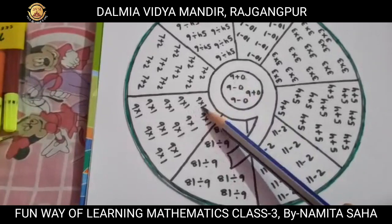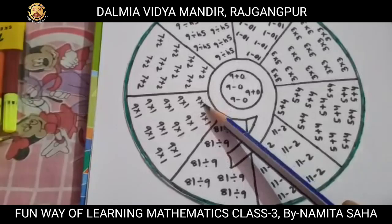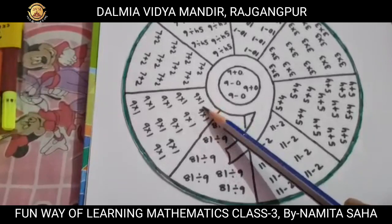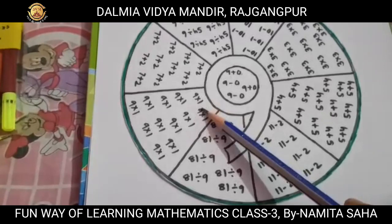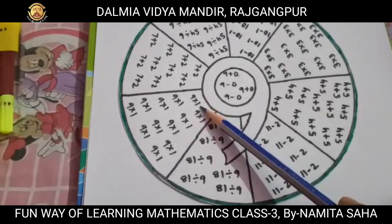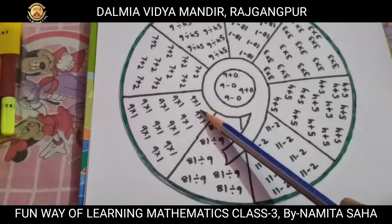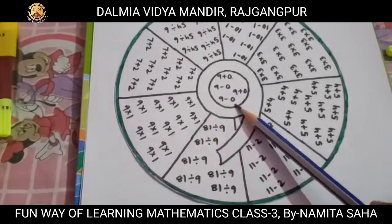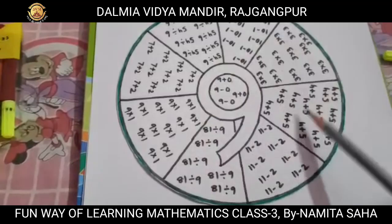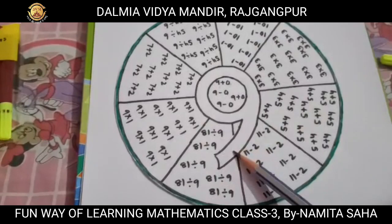Next, here you can see that 9 is represented as 9 into 1, because 9 into 1 gives us the value 9. So as per the rule, whenever any number is multiplied by 1 it gives us the same value. So 1 is called the multiplicative identity, and it is one of the properties of multiplication. Children, is it interesting? From this activity you came to know about different arithmetic operations and two properties — the property of addition and the property of multiplication.